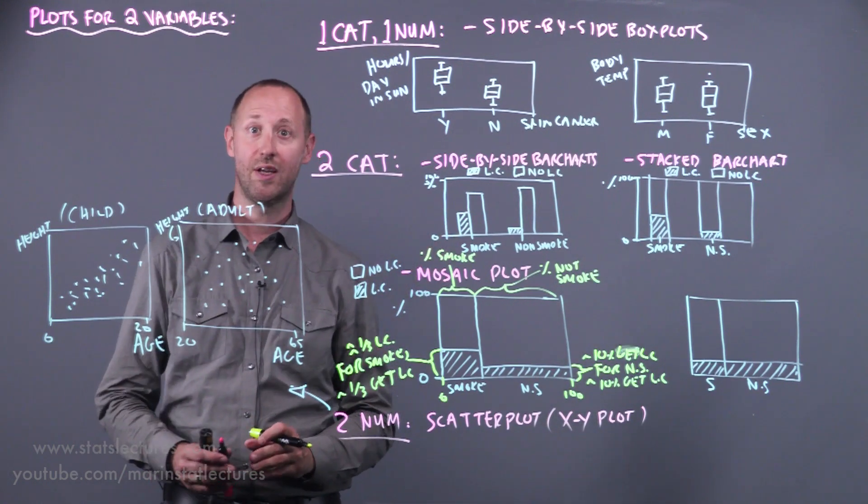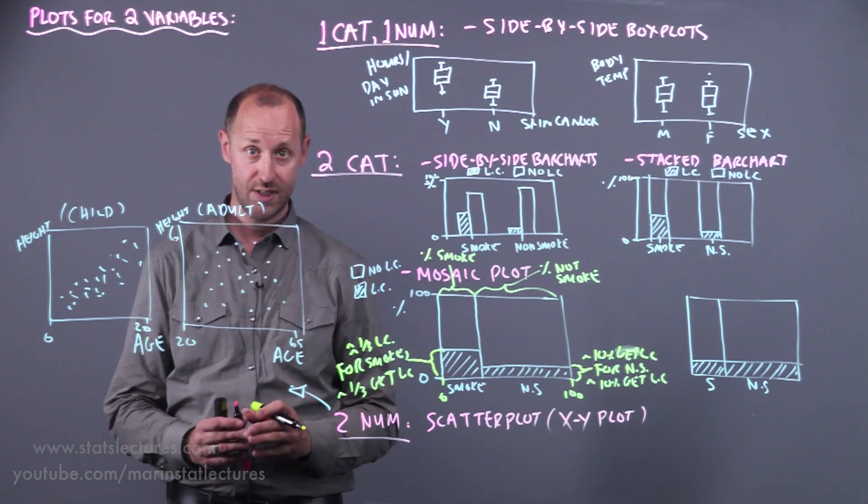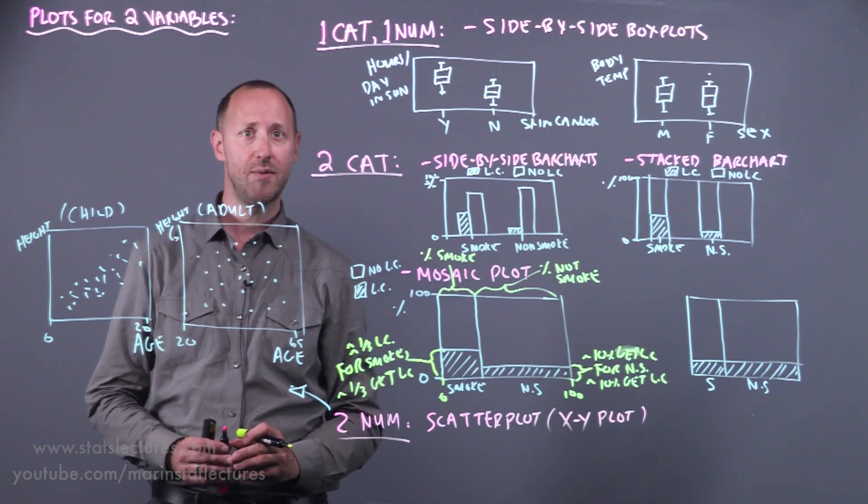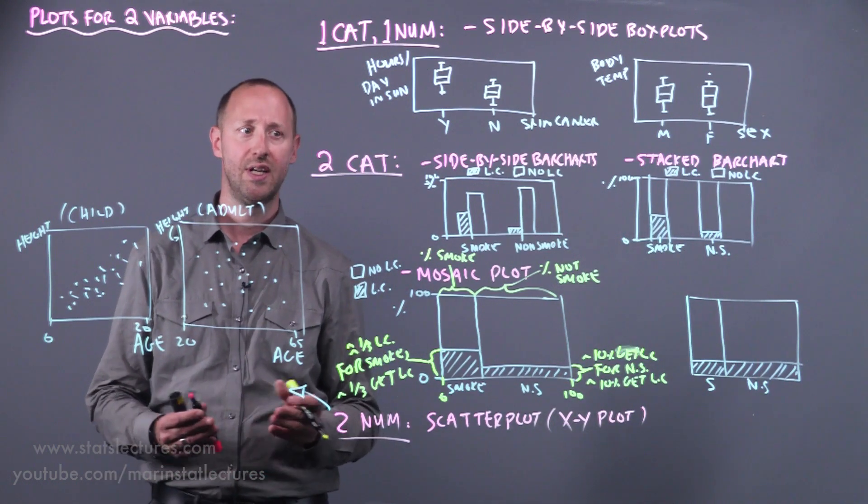Two categorical variables, we might look at chi-squared tests, Fisher's tests, odds ratios, rate ratios, these sorts of things. And two numeric variables, Pearson's correlation or Spearman's correlation, simple linear regression, and those.